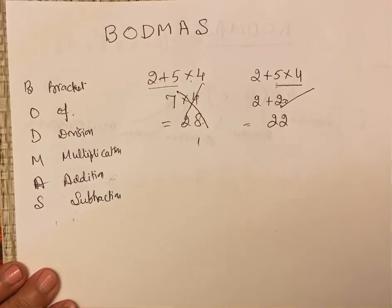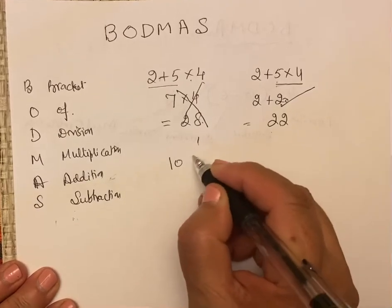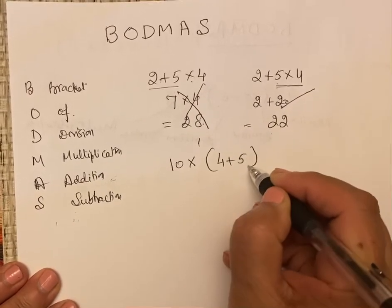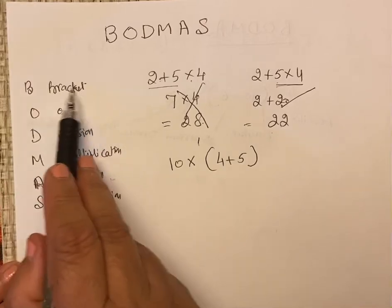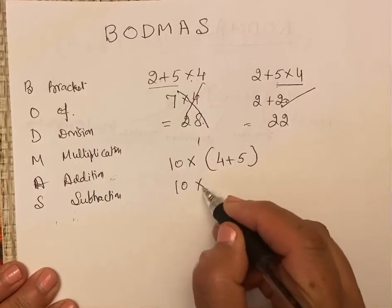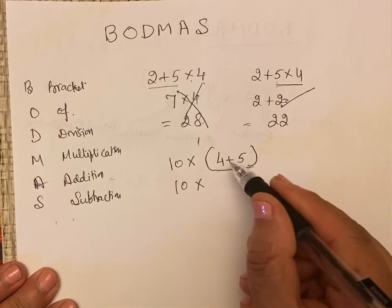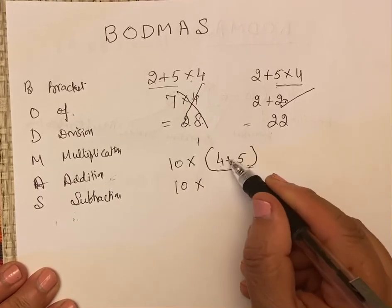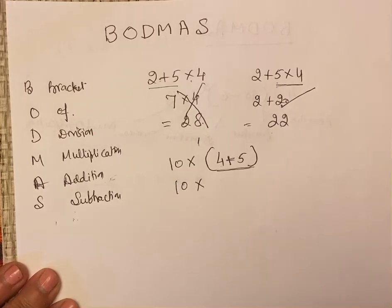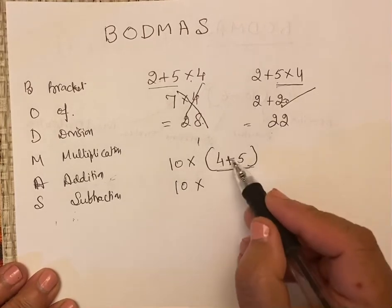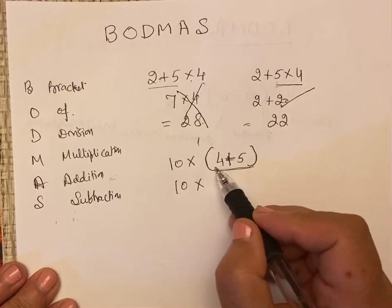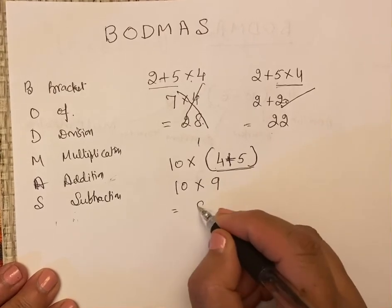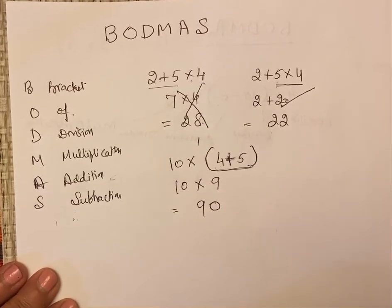Now we can take another example. We can say, if we take 10 into 4 plus 5. Here, bracket is the first one. First priority goes to bracket. So 10 into 4 plus 5. Here we will not see if it's plus or minus, addition or subtraction or multiplication or division. Anything can be here. So we will take only the bracket. So 4 plus 5, 9. The answer comes equal to 90. This is the right answer.